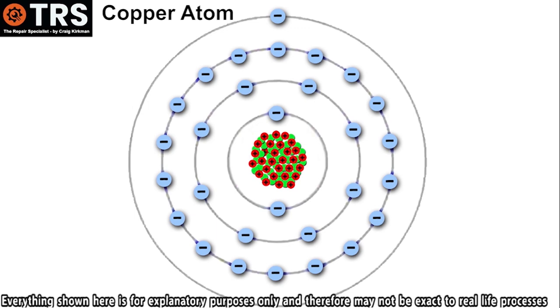And that is, whilst it's got 29 electrons that orbit its center nucleus, it's this electron that exists alone on the outside of all of them that allows for that conductivity. And how does it do that?